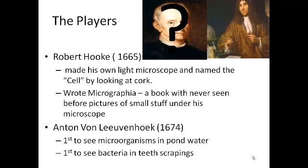So, who are the players? Well, first off, we have Robert Hooke in 1665. He made his own light microscope and he named the cell by looking at cork and thinking that it looked like a cell of a monastery. Now, up in the corner, you see that we don't know what he actually looks like, because he got into a big fight with Newton, and Newton took all of his things. Robert Hooke also wrote the book Micrographia — a book that had never been seen before, with pictures of small stuff under his microscopes. Everybody could see and read this book, because it was all about pictures.